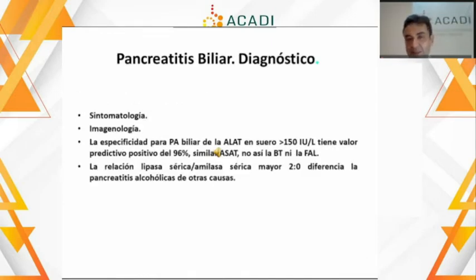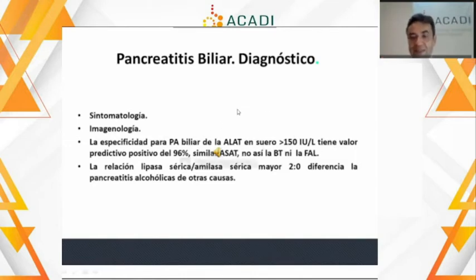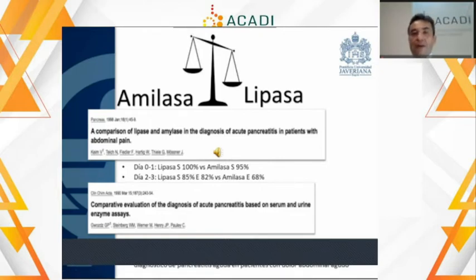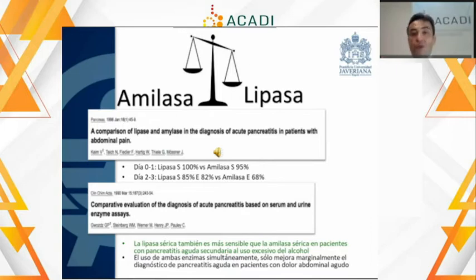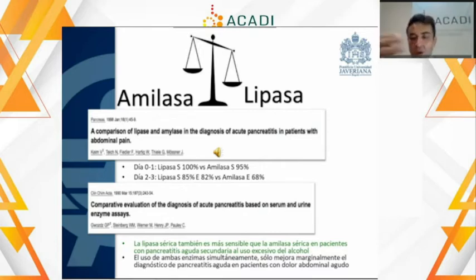Para la pancreatitis biliar, la etiología más importante en nuestro medio, la elevación de la transaminasa ALAT es bastante sensible, incluso por encima de la ecografía. Siempre surge la pregunta de qué es mejor, la amilasa o la lipasa: la respuesta depende del momento. Si se pide precozmente, cuando el paciente lleva menos de 24 horas de evolución del dolor, la amilasa es una muy buena prueba, barata y ampliamente disponible. Después de esa ventana, el rendimiento de la amilasa cae y mejora el de la lipasa. Lo que no se recomienda es pedir las dos, porque no potencia el diagnóstico y genera más costos.